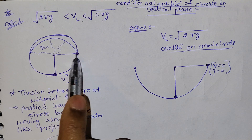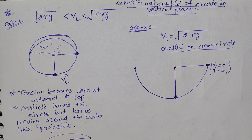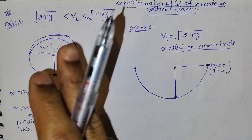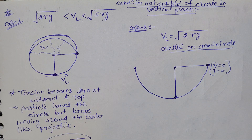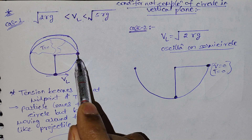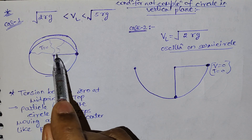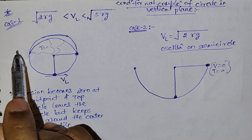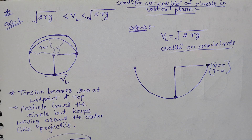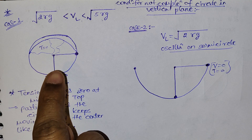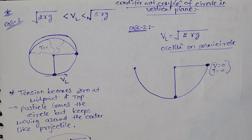From the lowest point to horizontal point (90 degrees), velocity needed is root(2RG). If we give root(5RG) the particle completes the circle. But if velocity is between root(2RG) and root(5RG), the particle reaches horizontal but then tension becomes zero, so it does not complete the circle and follows a different path — tension in the rope becomes zero.